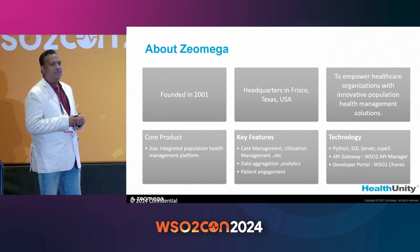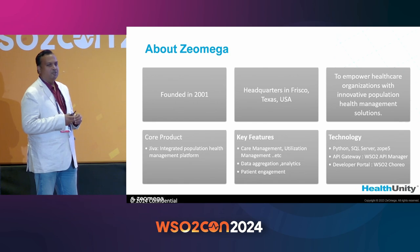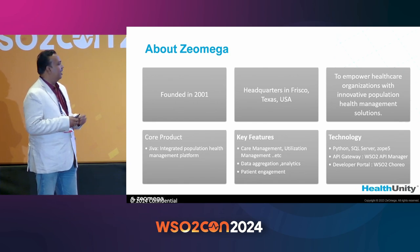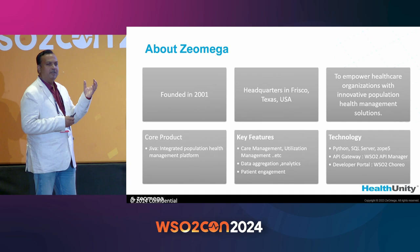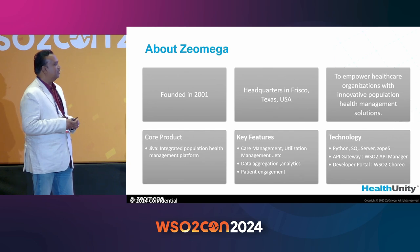For example, if you are a member in the United States with coverage from a health insurance company, population health management helps the member achieve better cost, better health, and better care for their coverage and how it is being utilized. Based on their utilization management, there is an outcome of care management, and that's a key feature of our product.